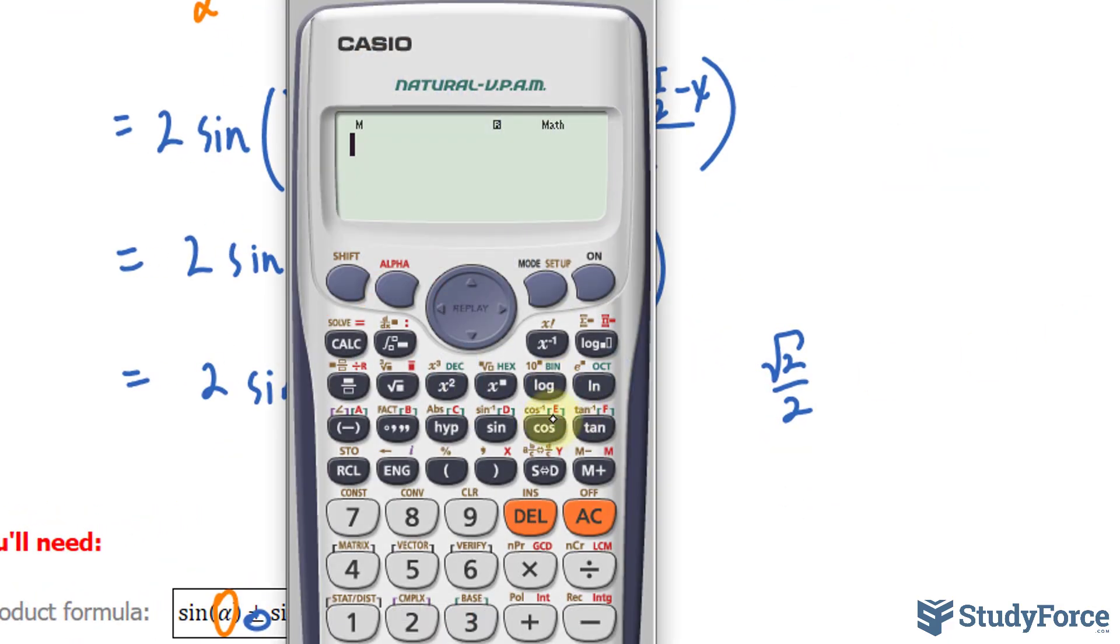And you can verify that on your calculator. Let me show you really quickly. Cos(π/4), make sure that your calculator is in radians, gives you square root of 2 over 2.